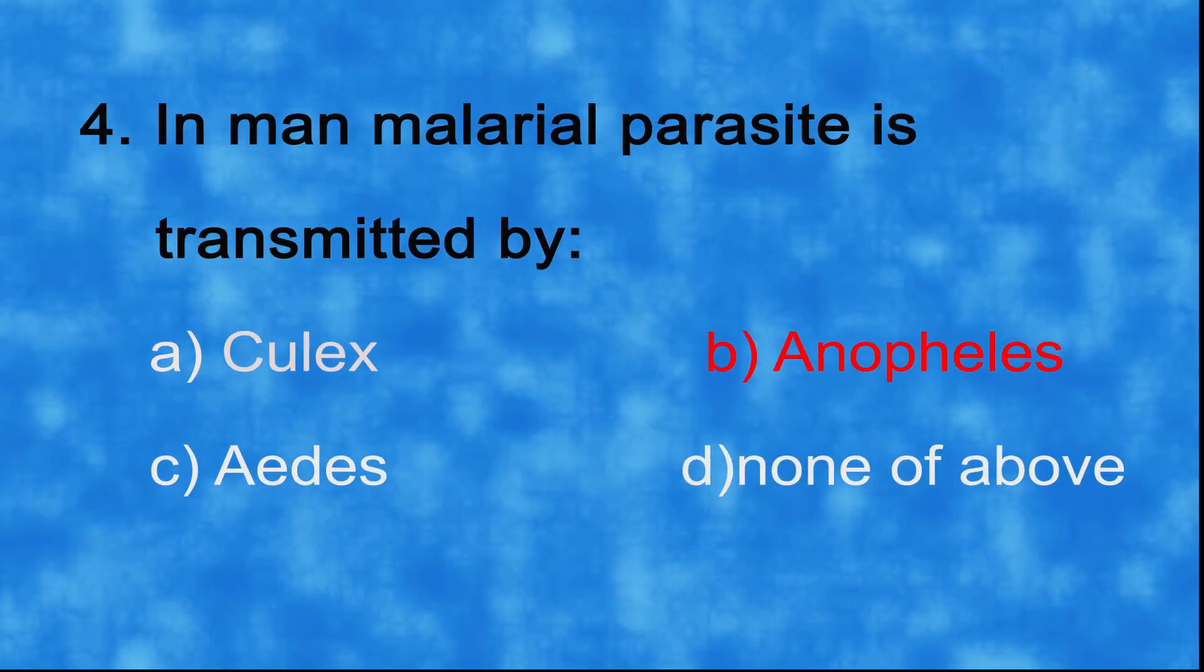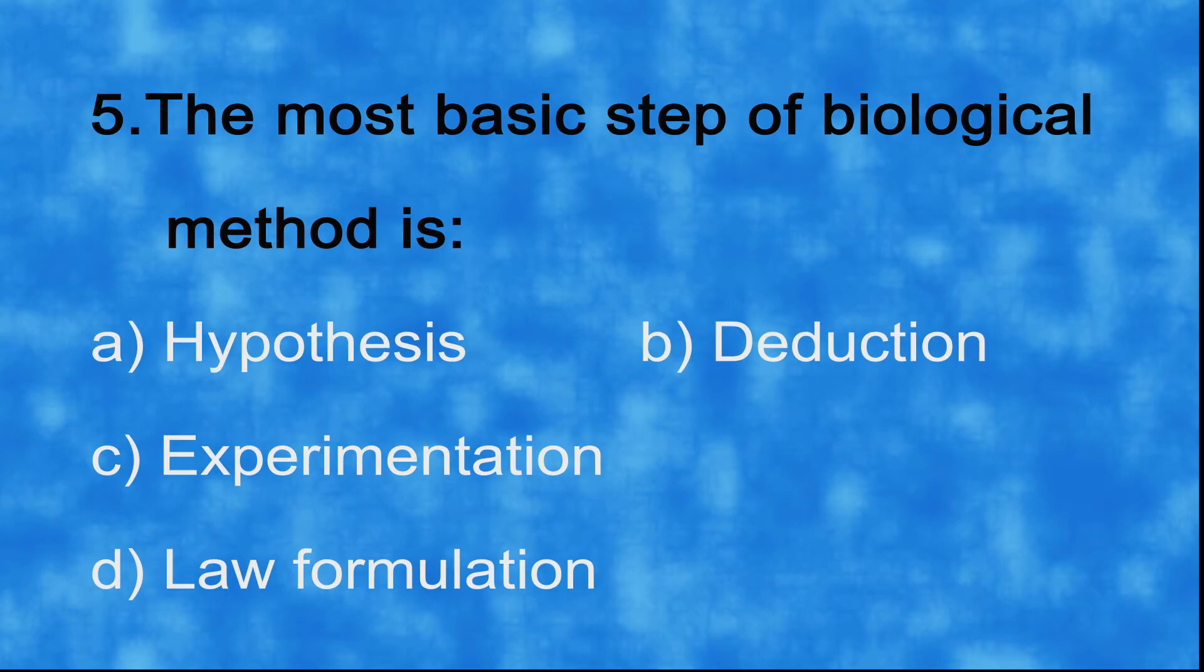c) Aedes. And the correct option is b) Anopheles. Number five: the most basic step of biological method is a) hypothesis, b) deduction, c) experimentation, d) law formulation.